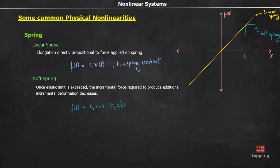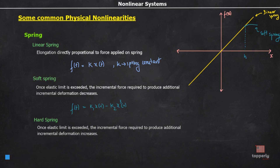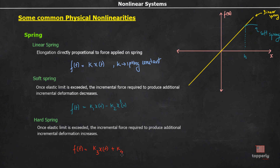Coming to the case of hard spring, once the elastic limit is exceeded, the incremental force required to produce additional incremental deformation increases as the spring is deformed. The equation of hard spring is given by f(t) = k3·x(t) + k4·x³(t). In the graph, once the elastic limit is reached, the graph deviates upward. Similarly, in the negative direction, the graph deviates like this for hard spring and deviates like this for soft spring.